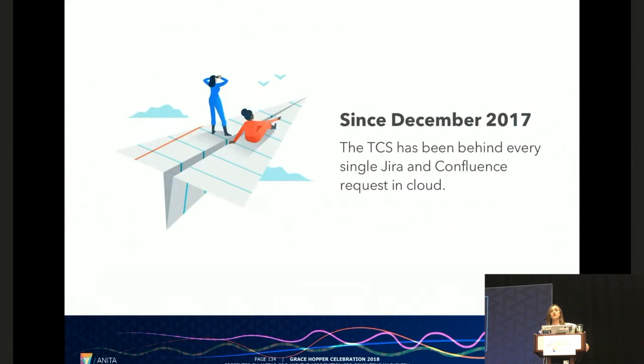Nevertheless, despite all the problems we had to solve since December 2017, the TCS has been behind every single Jira and Confluence request in cloud. And this also marked the end date of our big multi-tenant move all the things to AWS project.